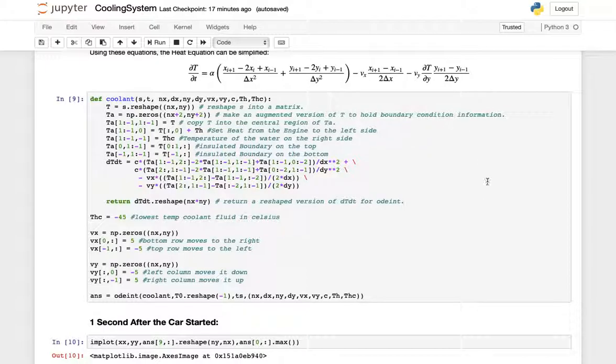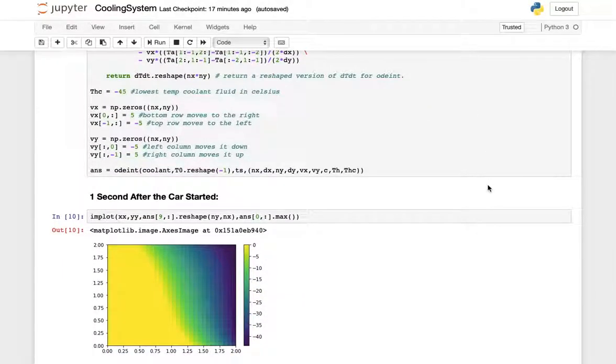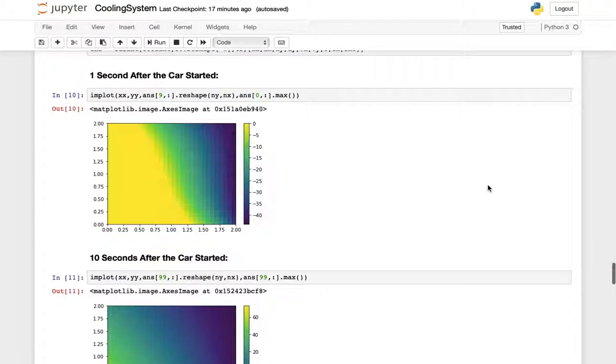Plugging that all into our code we have a new model for this engine. After one second that our car started we see that we have our negative 45 degree on our right side which is the temperature of the coolant, and then we have our engine which is starting to heat up.